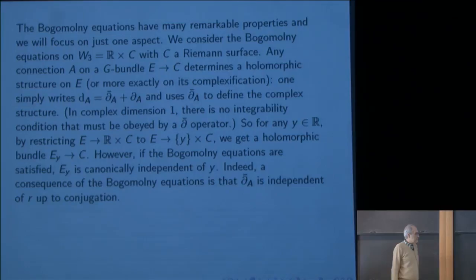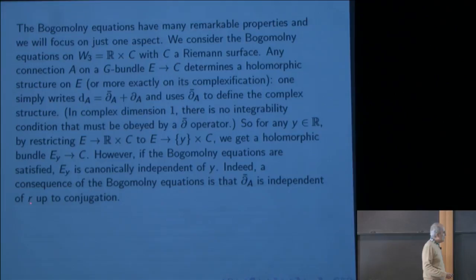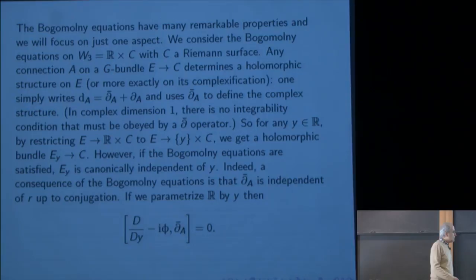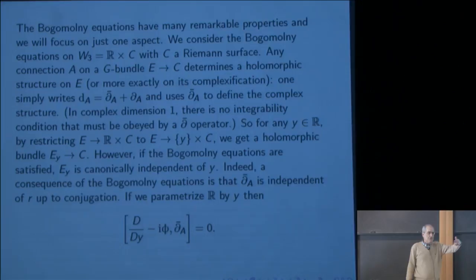Part of the Bogomolny equations says that the D̄ operator is canonically independent of y, so there's a canonical isomorphism between the E_y's for different y. The same specialization of the Bogomolny equations was used by Donaldson more than 30 years ago, where he reinterpreted the Bogomolny equations in terms of holomorphic maps — in terms of spaces of rational functions. The statement that E_y is independent of y is a kind of dual version of what Donaldson said.